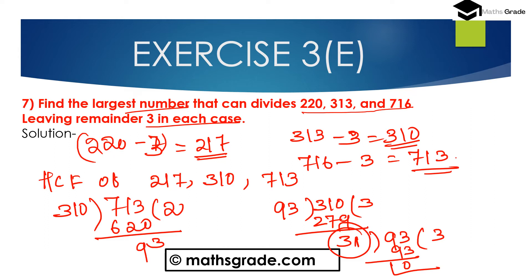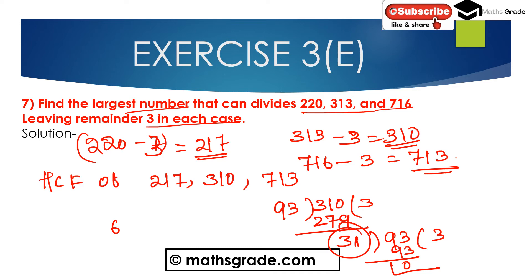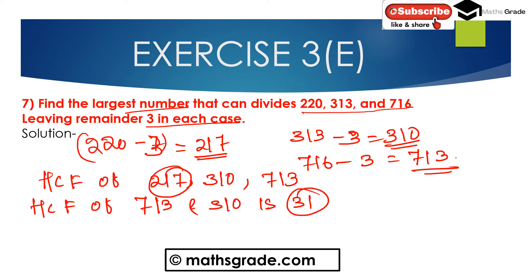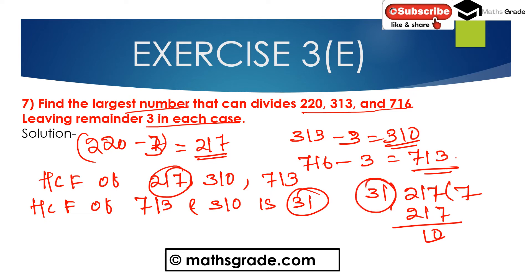The highest common factor between 713 and 310 is found. Now find out the highest common factor of 217 and 31. Dividing 217 by 31, we get 31 as the highest common factor between 217 and 31.